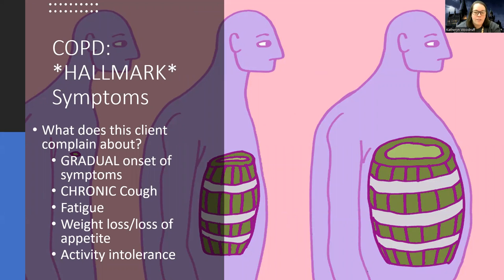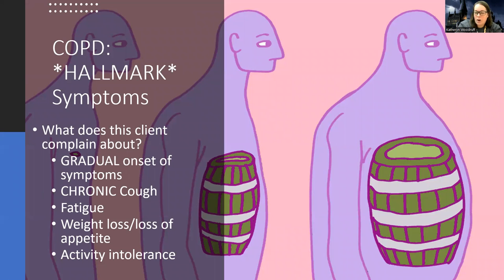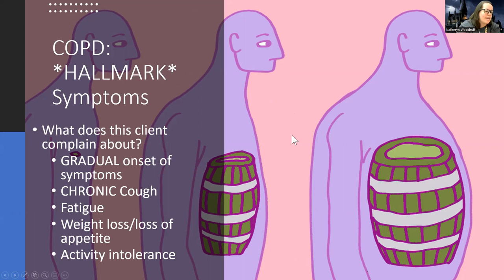Compared to asthma where attacks are usually sudden, COPD has a more gradual onset of symptoms over time. A patient might say they used to only get short of breath with exercise, but now they're breathless just sitting down. A chronic cough is often one of the first symptoms. Patients also have a lot of difficulty moving and breathing simultaneously, and may experience weight loss, difficulty eating, and persistent fatigue.